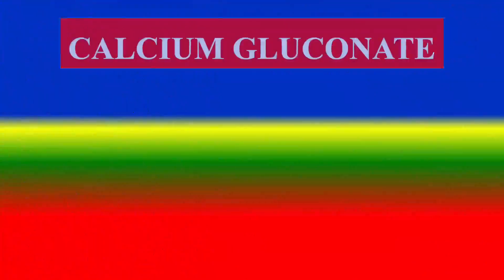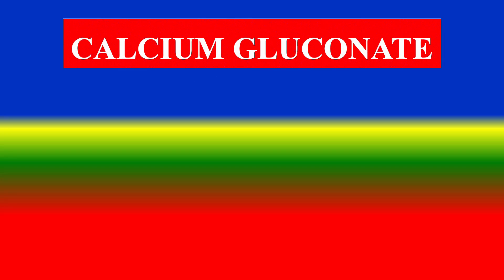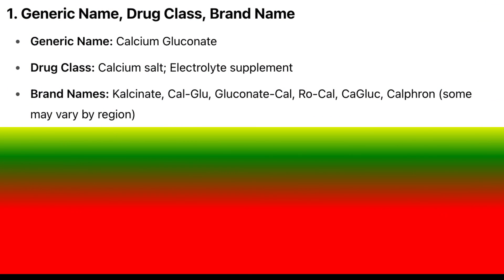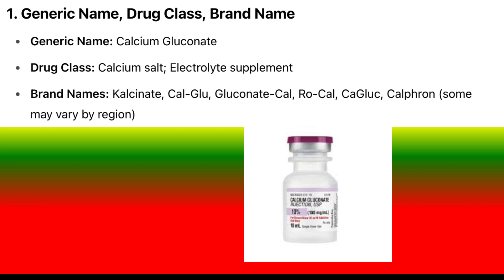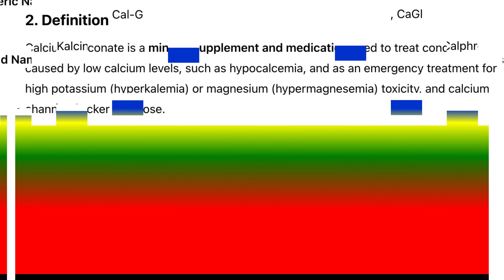Here's a detailed profile on calcium gluconate. Generic name: calcium gluconate. Drug class: calcium salt, electrolyte supplement. Brand names: Calcinate, Calglue, Gluconate Cal, Rocal, Caglute, Calfron — some may vary by region.